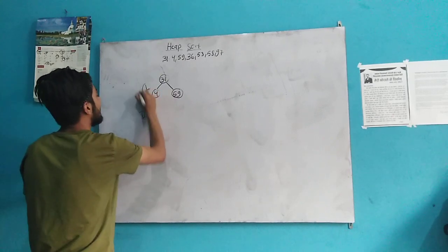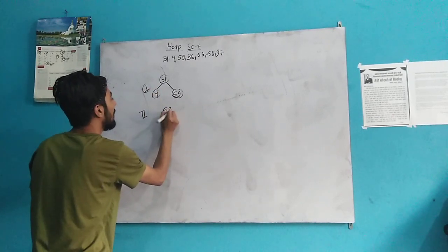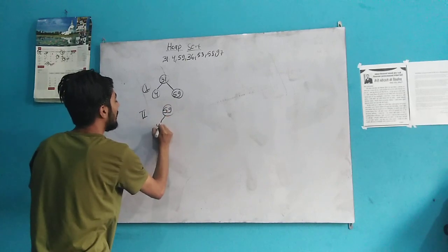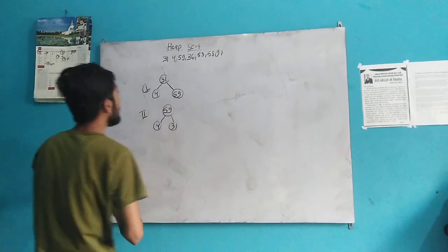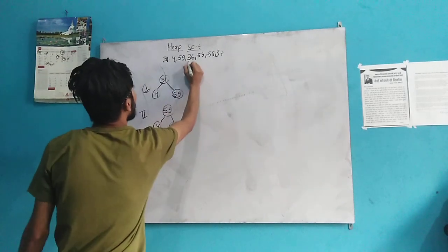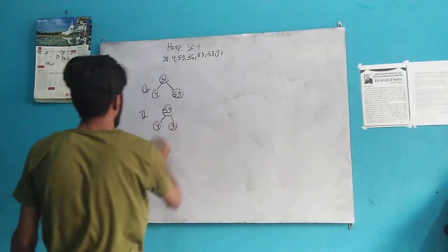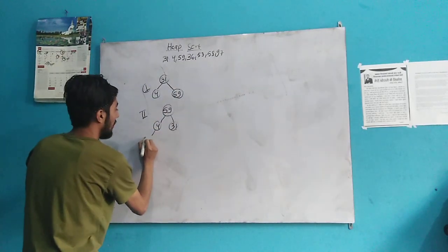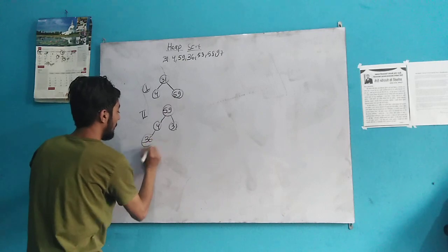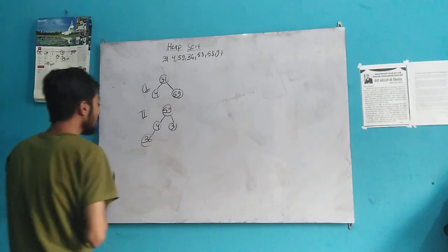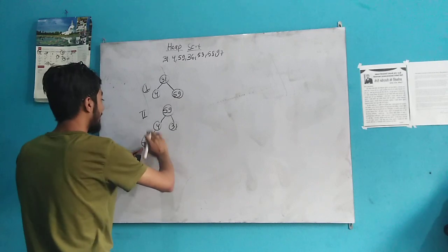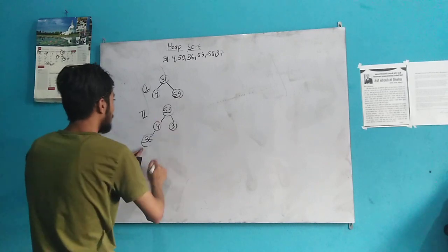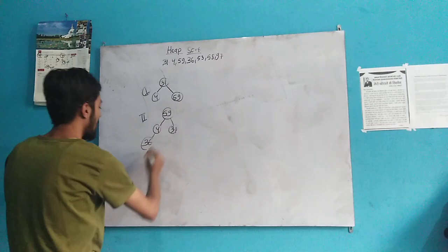Let me consider the first step and second step. Here we have 59, 4, and 31. Now, the next element is 36. We put this here. Again, this 36 is greater than 4, so we need to again swap it.